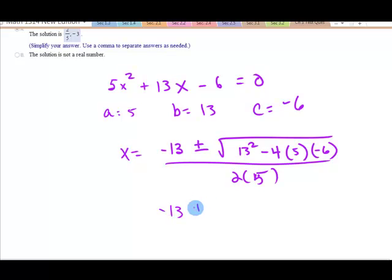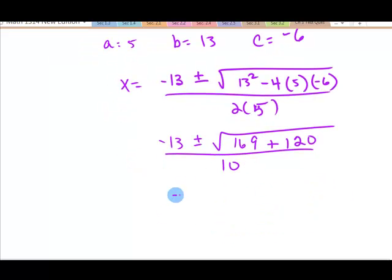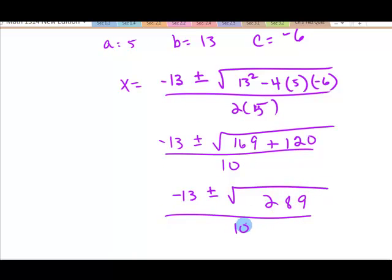Okay. Negative 13 plus or minus square root of 169 plus 120 over 10. And we're just working this through. Negative 13 plus or minus square root of 289 over 10.